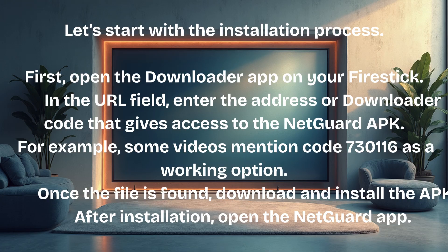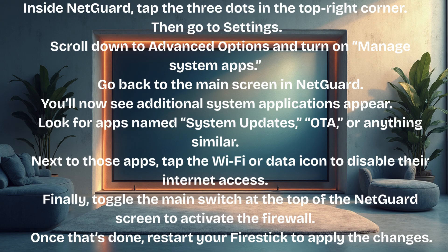Now let's move on to configuration. Inside NetGuard, tap the three dots in the top right corner, then go to Settings. Scroll down to Advanced Options and turn on Manage System Apps. Go back to the main screen in NetGuard — you'll now see additional system applications appear. Look for apps named System Updates, OTA, or anything similar. Next to those apps, tap the Wi-Fi or Data icon to disable their internet access.